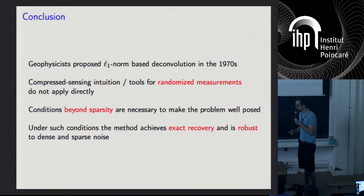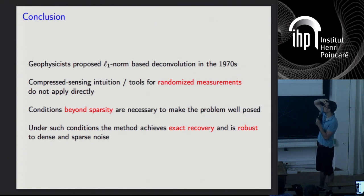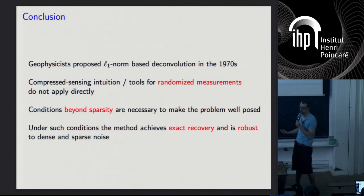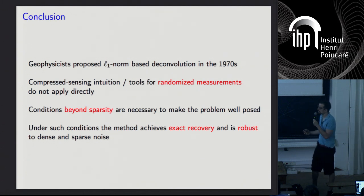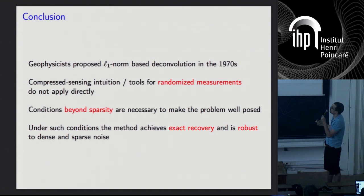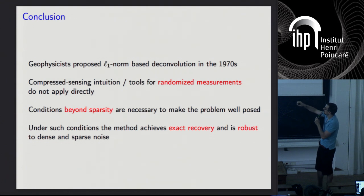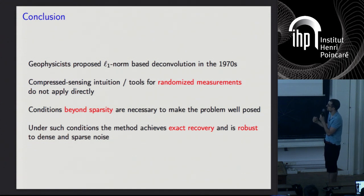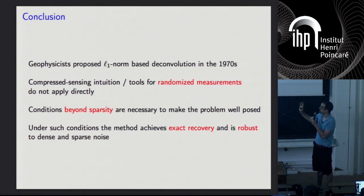To conclude: L1 norm minimization for deconvolving spikes is a very old idea from the 70s and 80s. At that point we didn't have the theoretical tools to understand why it works, but now we do thanks to compressed sensing. However, we cannot just apply compressed sensing theory blindly — it won't work. But we can use the intuition and adapt it to establish conditions beyond sparsity that make the problem well posed, and under those conditions the method achieves exact recovery and is robust to both dense and sparse noise.